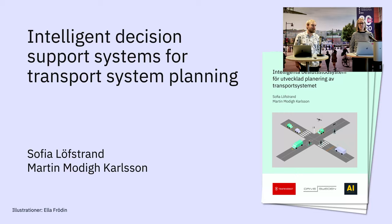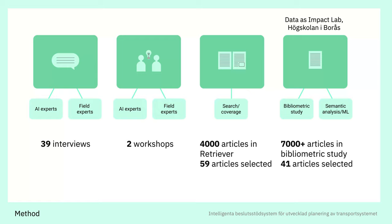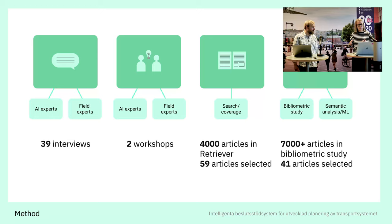Before we hand over to them, I just want to explain a little bit about the background of why we are here together today. It's due to a quite interesting project we did with the Swedish Traffic Administration, where we at Drive Sweden and AI Sweden did a pre-study on how to use AI more in the planning of the transport system. In that work, we did a lot of search of information — interviews, workshops, newspaper articles. From 4,000 articles, we found 59 that were really interesting for our case.